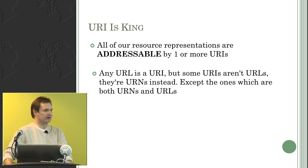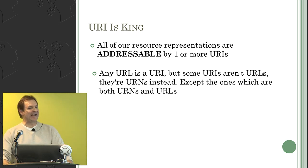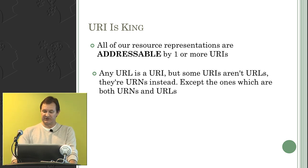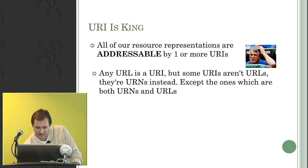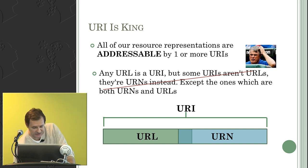Every single resource is represented by one or more URIs. The URI versus URL distinction is confusing—essentially a URL is a URI, and that's good enough. Any URL is a URI, but some URIs are URNs instead—except the ones which are both URIs and URLs. URI encompasses the superset. That is how we're going to address every resource: it will have at least one and potentially many URIs.